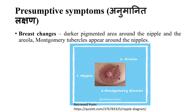The next breast change involves Montgomery tubercles. These are small raised glands that appear around the nipple and on the areola. Observing these changes is important for identifying presumptive breast changes in pregnancy.